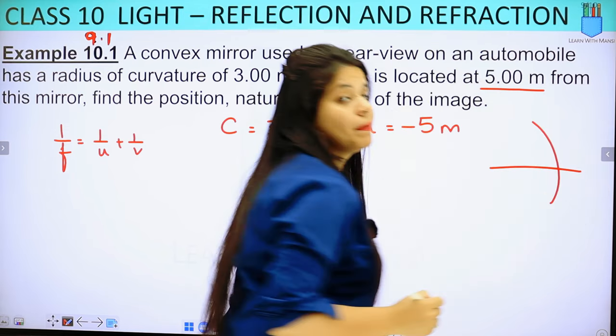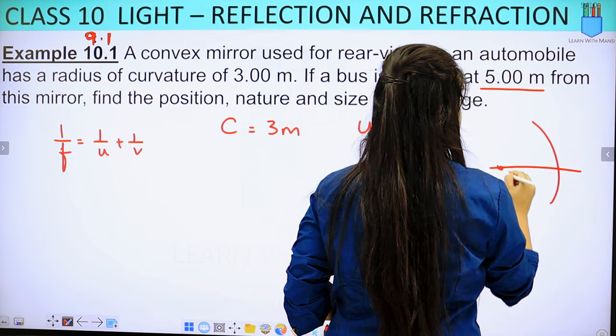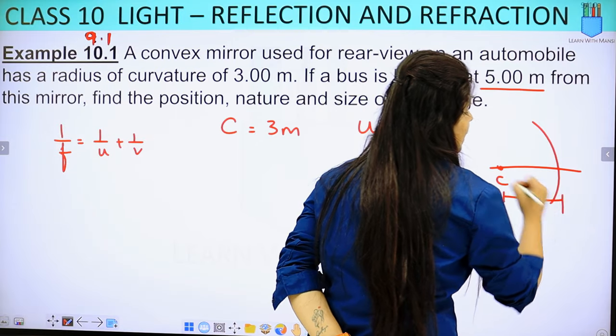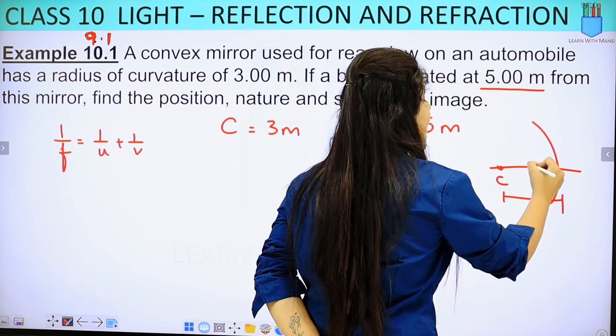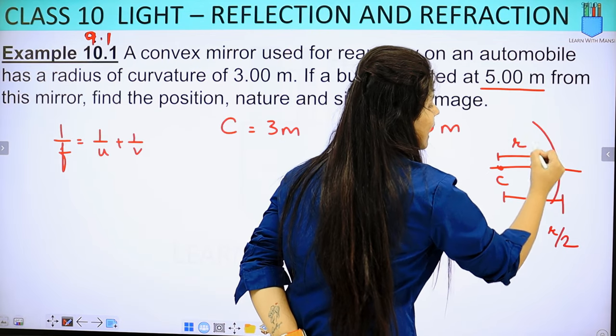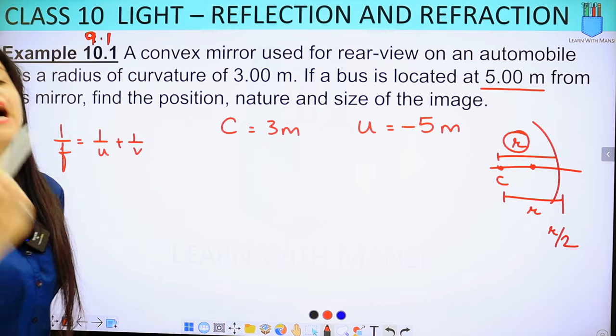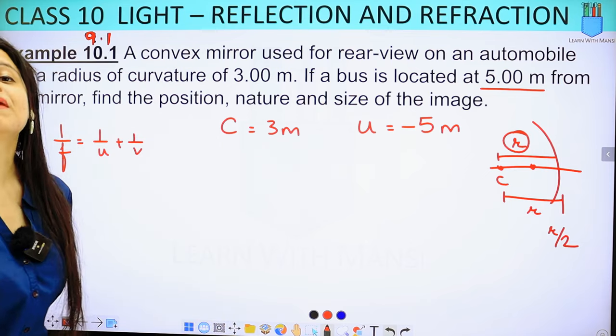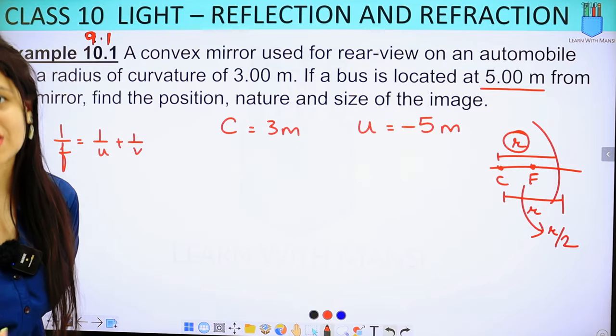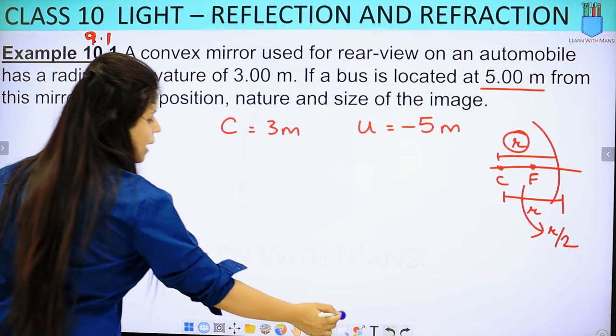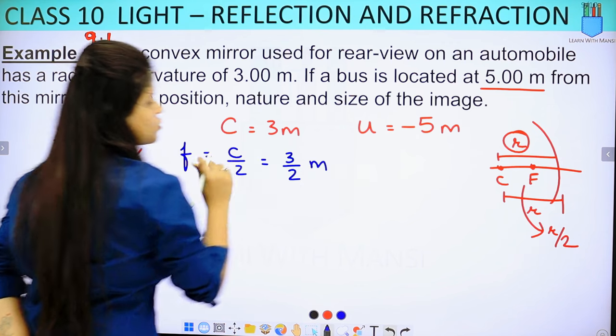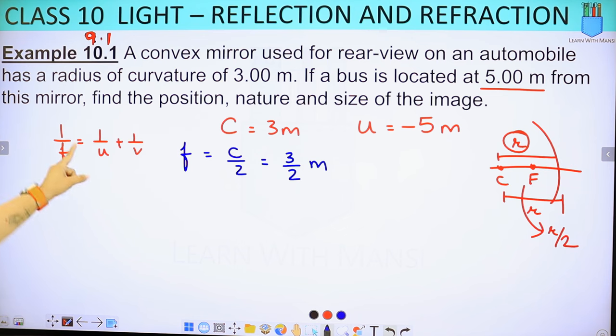Remember when we studied the mirror, the center is C, and the distance from C to pole is radius. The focal length is half of this radius. Which means, this distance C is R. So if we do R upon 2, we get focal length F. F equals R upon 2. So here we can write F equals C upon 2 means 3 upon 2 meters. So here we have F and U, we can find V from here.